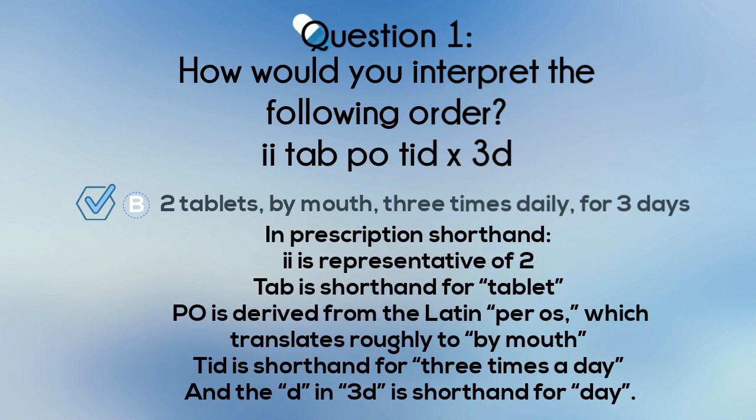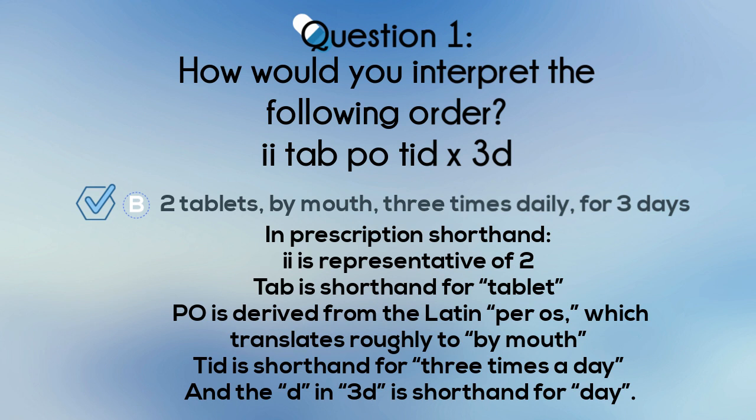Let's break the order down. In prescription shorthand, 'ii' represents two; 'tab' is shorthand for tablet; 'p.o.' is derived from the Latin 'per os,' which translates roughly to 'by mouth'; 't.i.d.' is shorthand for three times a day; and the 'd' in '3d' is shorthand for day.